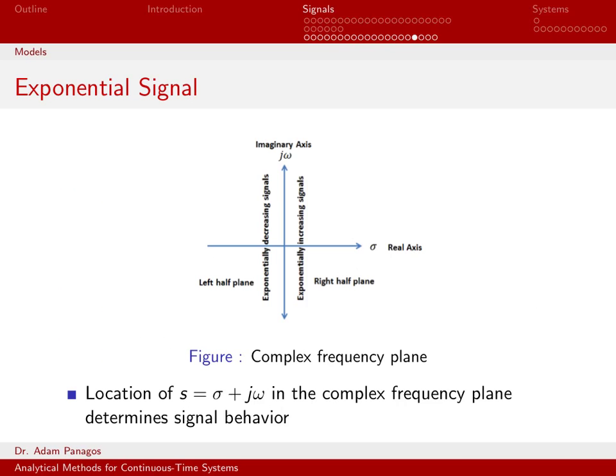This chart graphically explains what happens when you choose specific values for s. So this is the complex plane. This is the real axis, which we denote by sigma. This is the imaginary axis, which we denote by j omega. And any point s that you give me, I can locate in this complex plane.